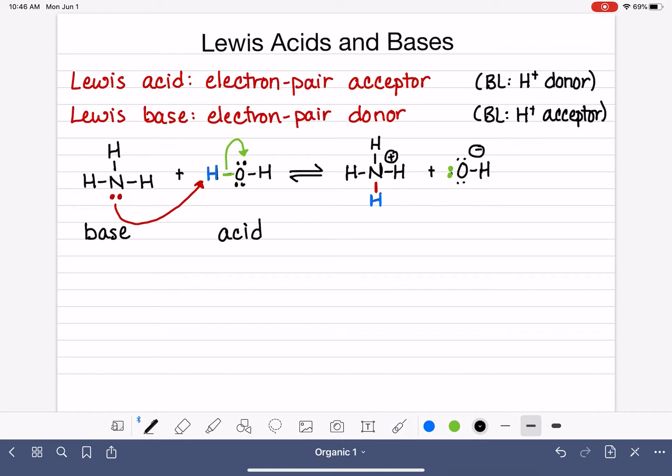So let's take a look at how this works according to the Lewis method. In the Lewis method, if we're looking at the movement of electrons, the electrons that are being donated to facilitate that hydrogen transfer, the electrons that are being donated to facilitate the hydrogen transfer are coming from the NH3.